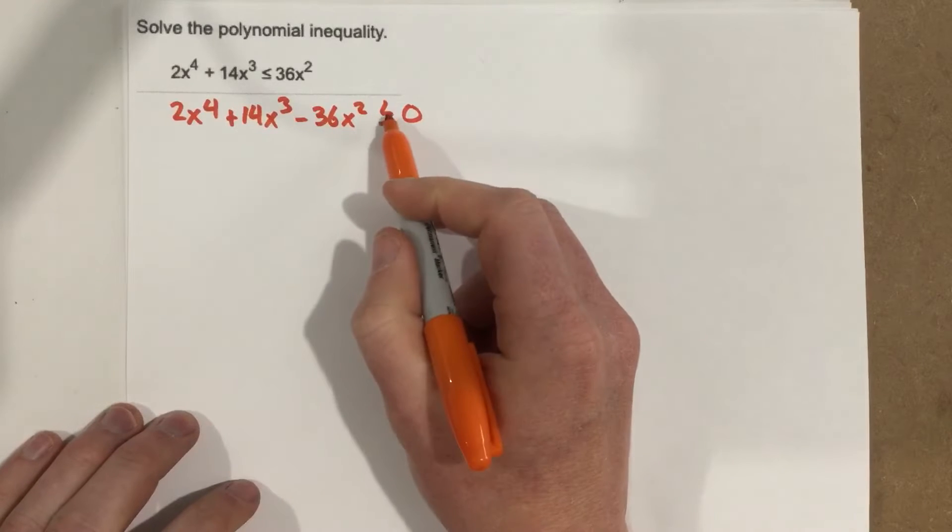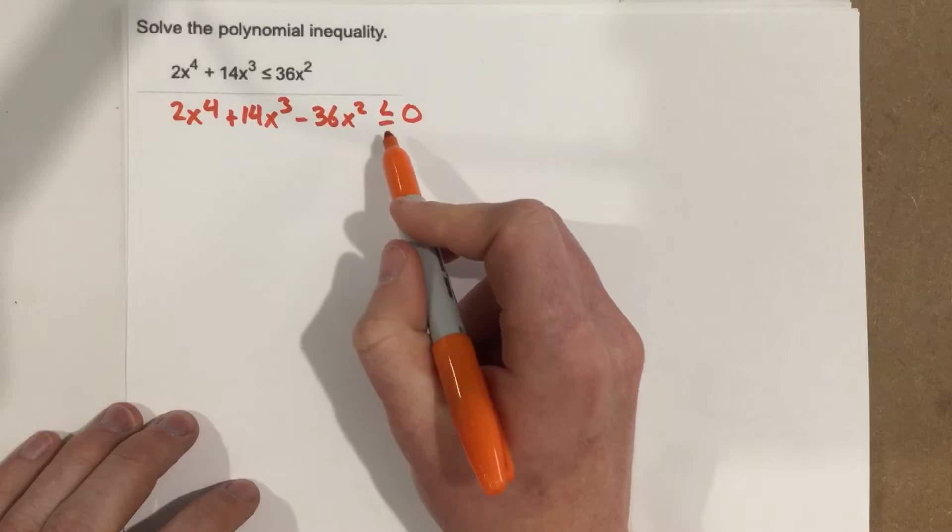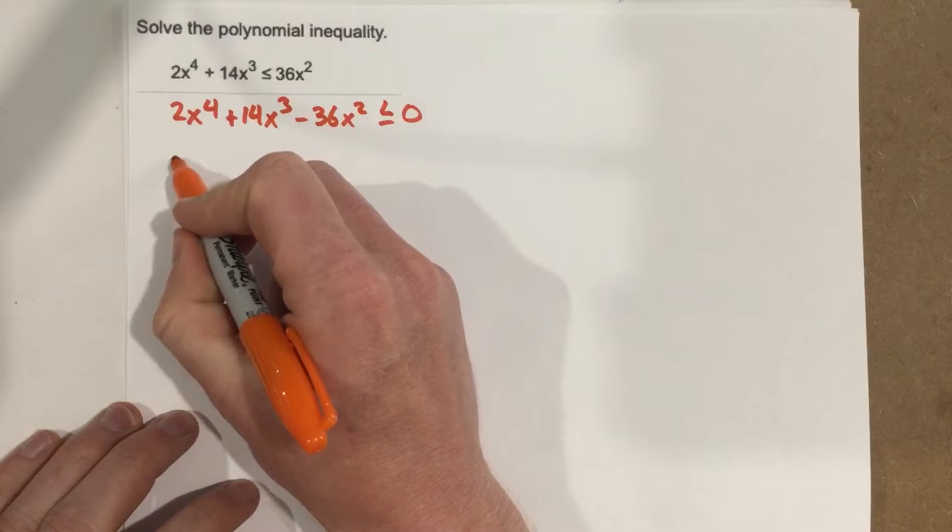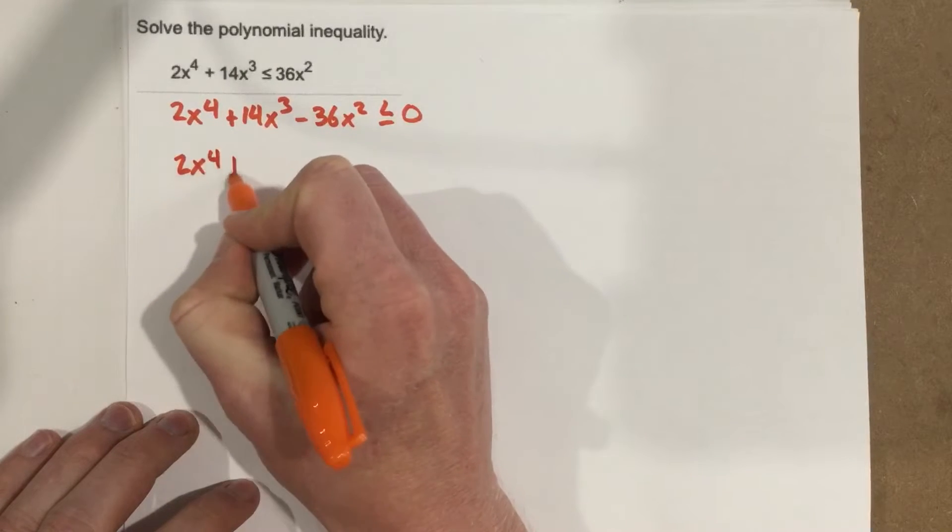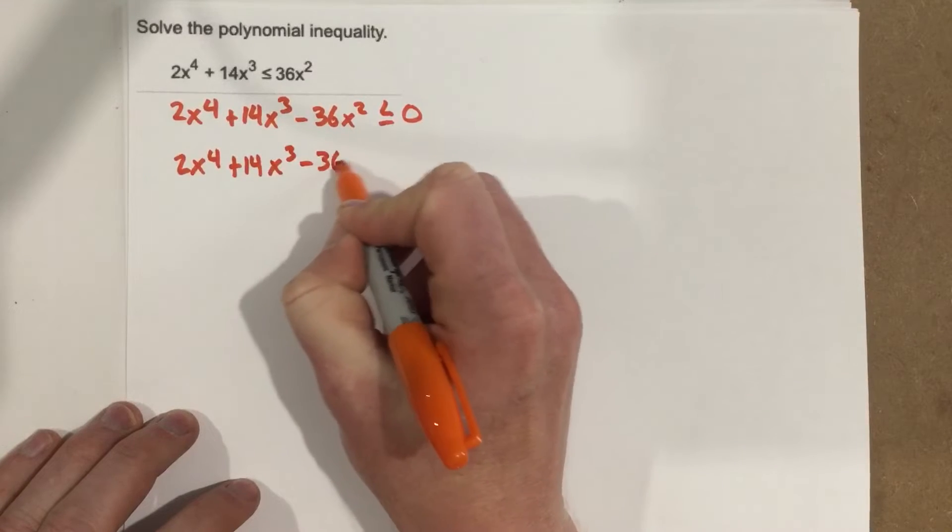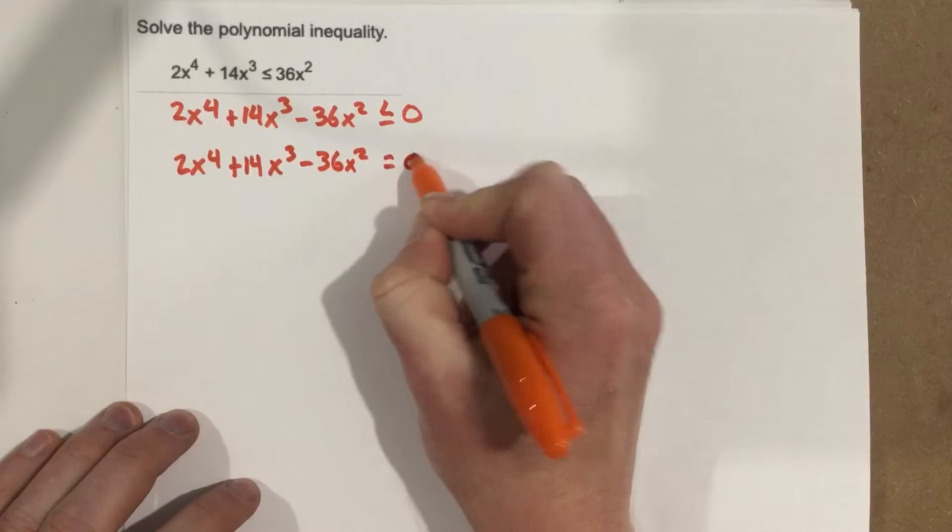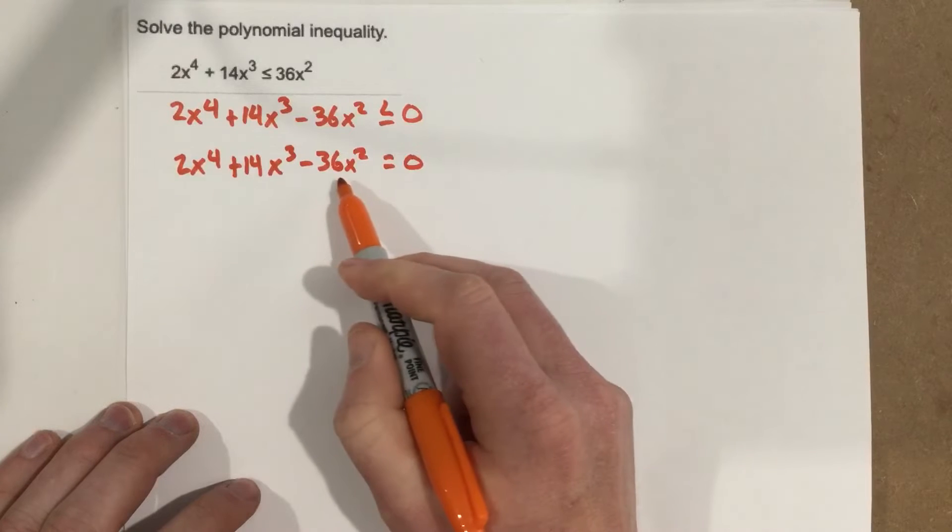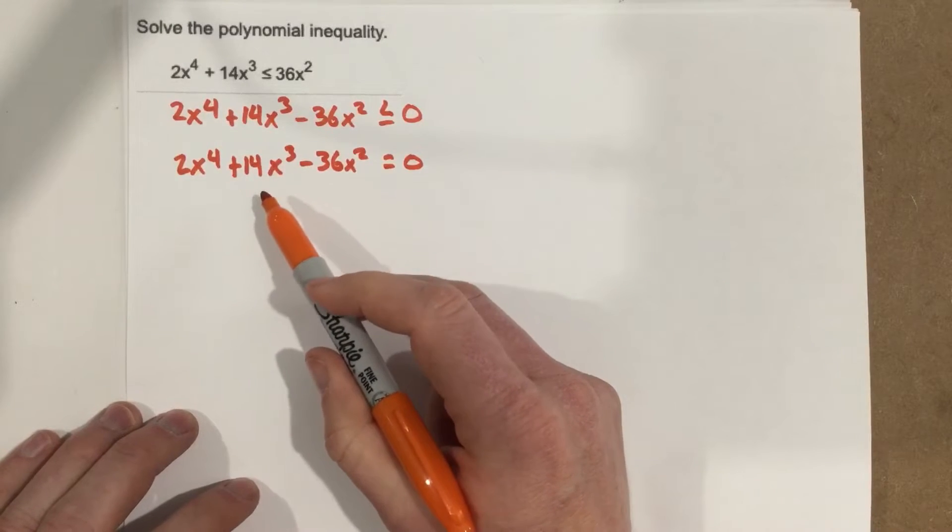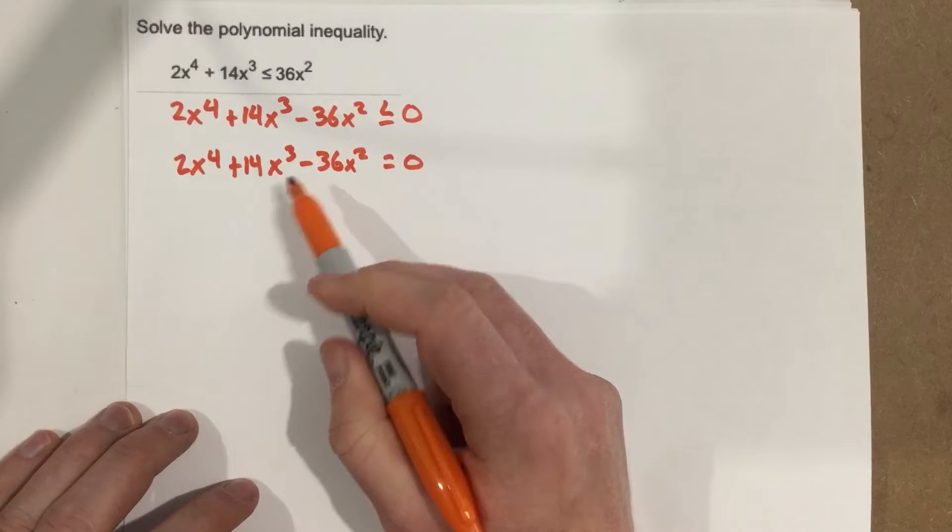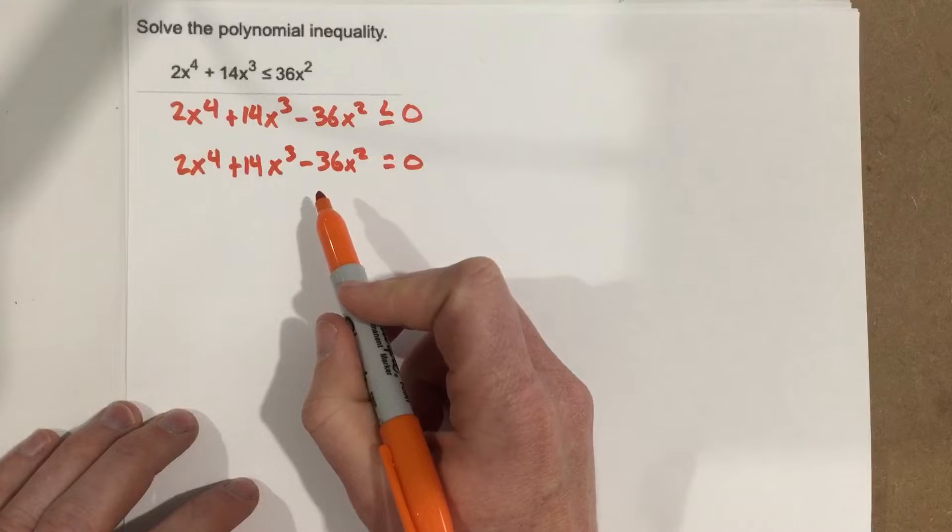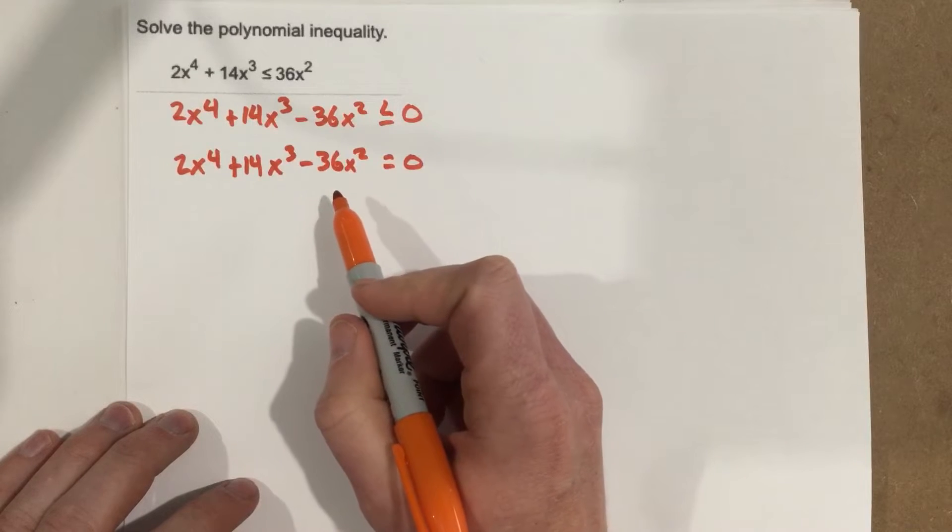Once you get it less than or equal to zero or greater than or equal to zero, at this point we're going to forget about the inequality sign for just a little bit. We're going to say that 2x to the fourth plus 14x cubed minus 36x squared equals zero. So our goal now is to find the zeros. If we find the zeros of this function, we're going to be able then to determine where our solutions lie. They lie between the roots or on the outside of the roots essentially.